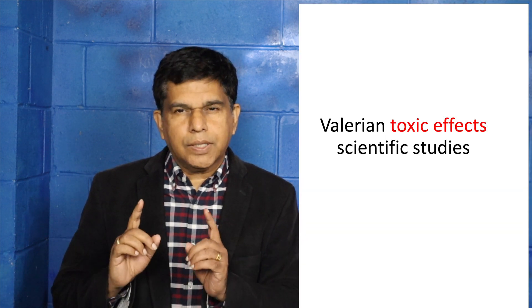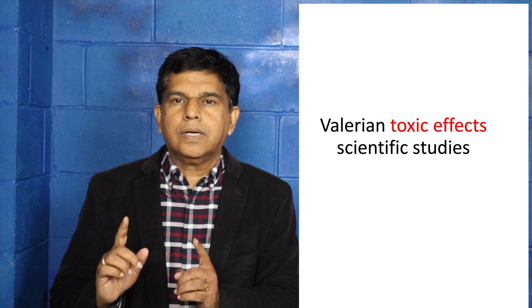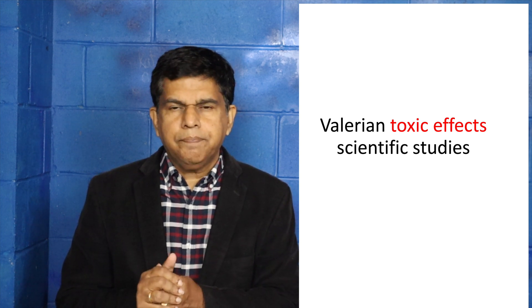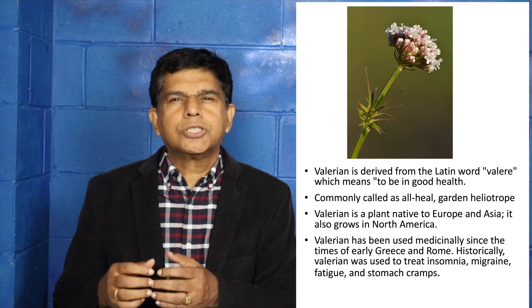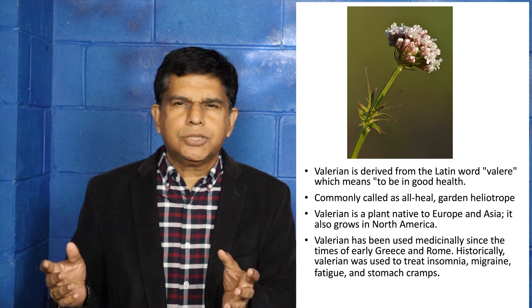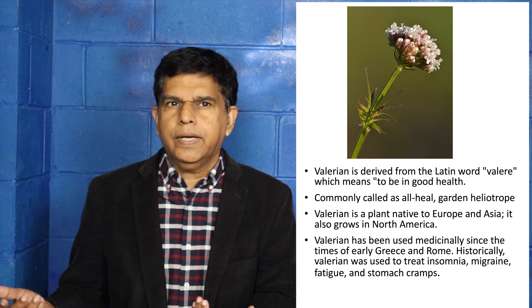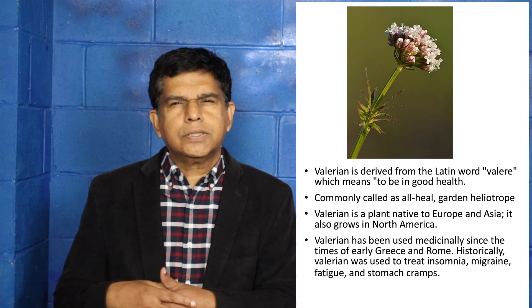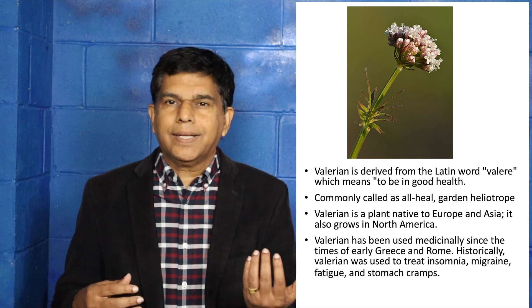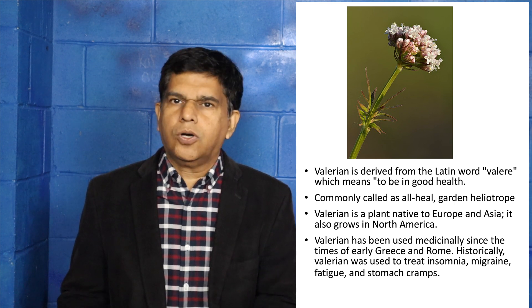Today we're going to look at another drug. Our purpose today is to teach you about the side effects of valerian root. Now, when you talk about valerian, what does that mean? Valerian means good health. And where is it usually found? This plant is pretty much everywhere — Europe, Asia, even in the Americas. Literature has reported that Greeks and Romans were using this drug for a very long time.